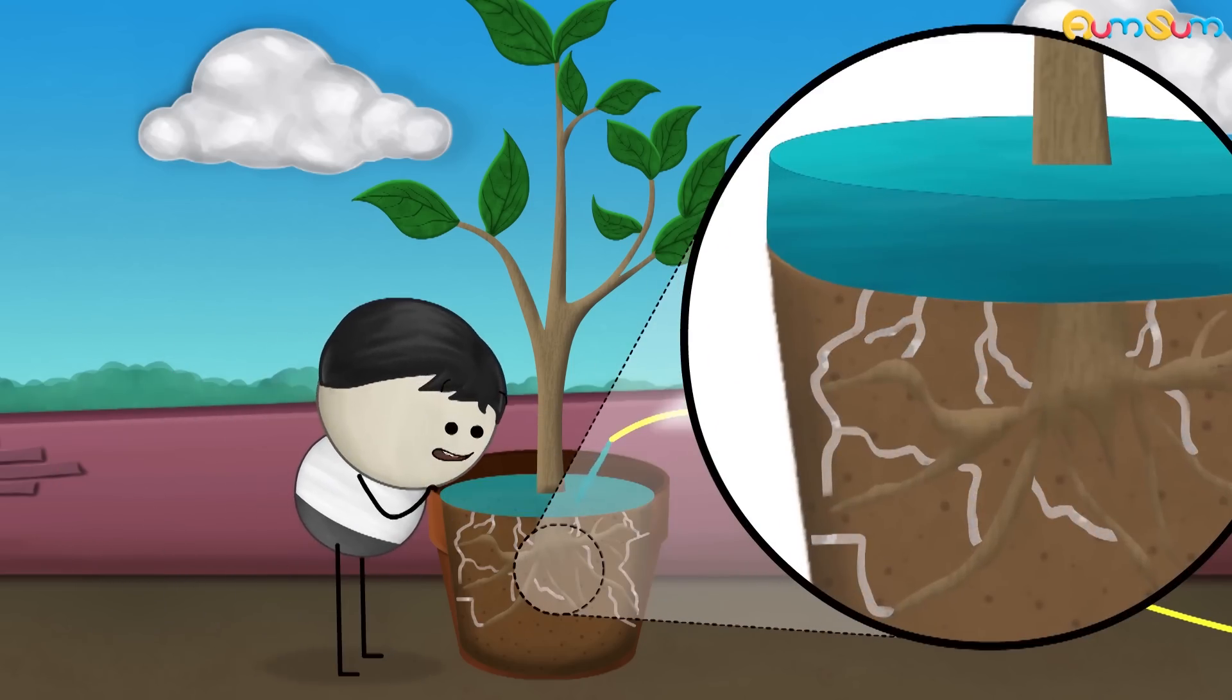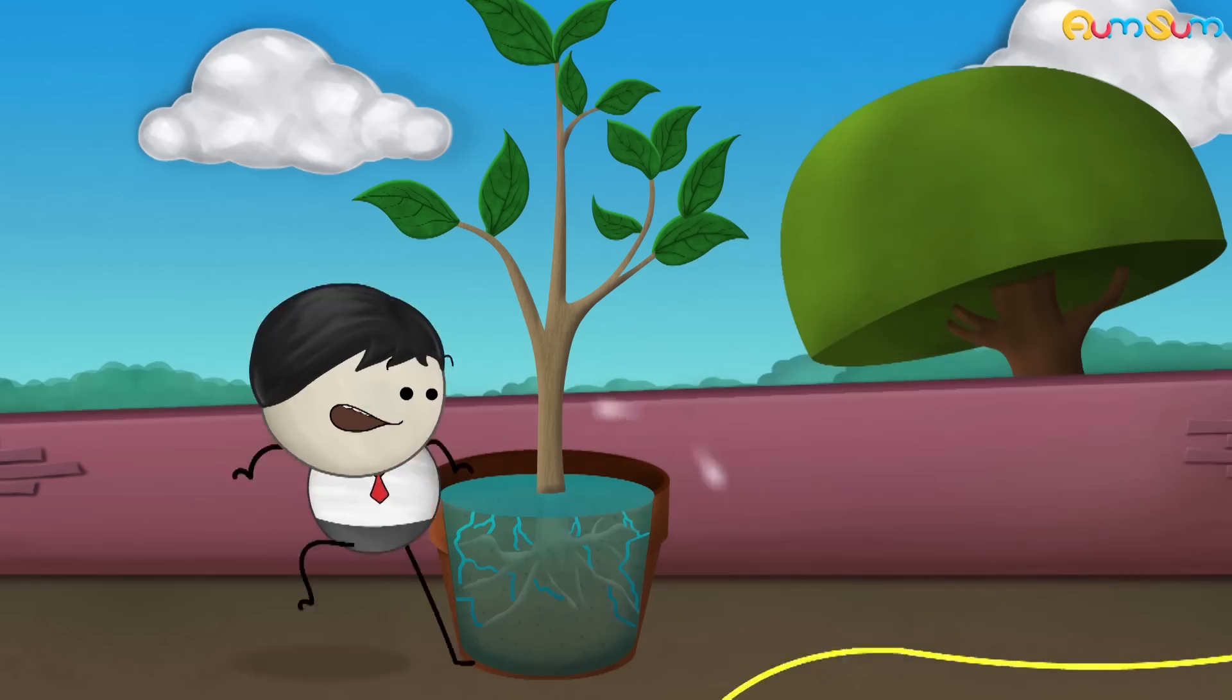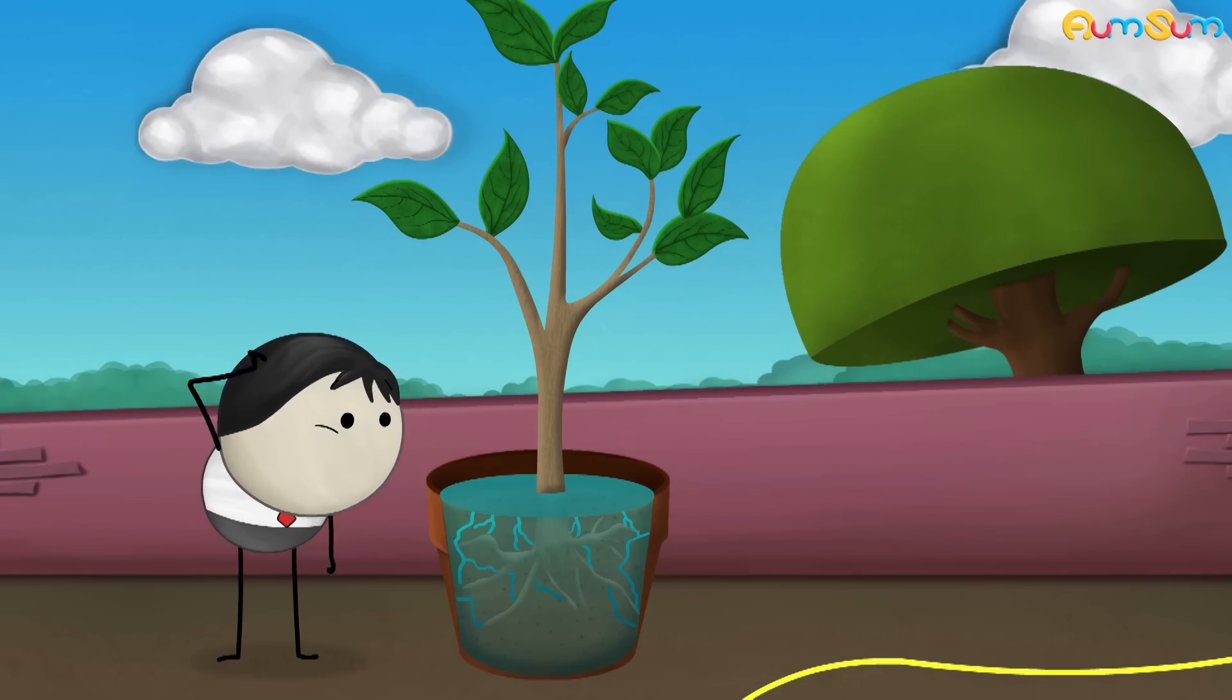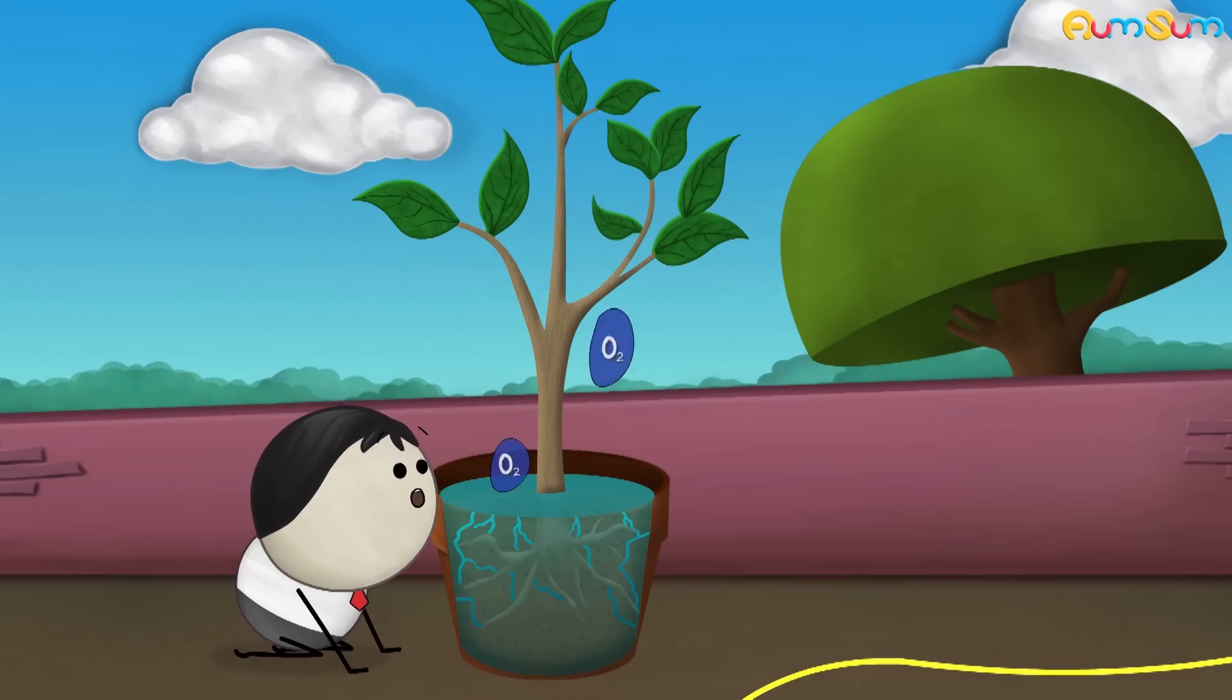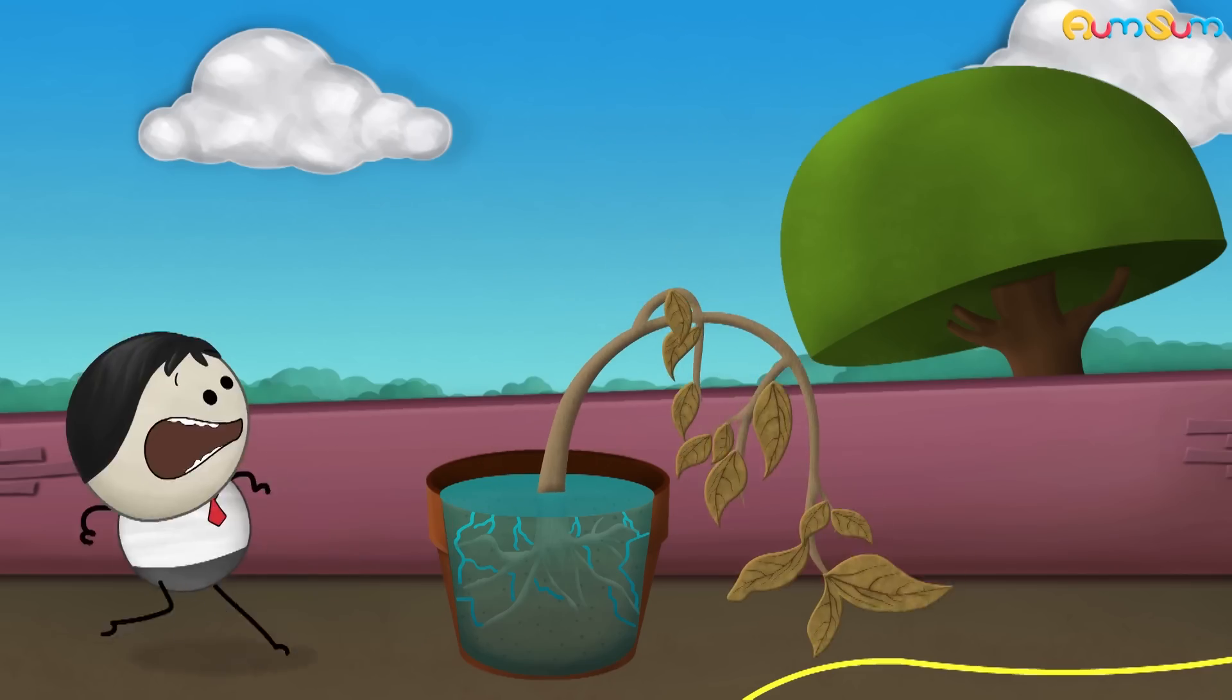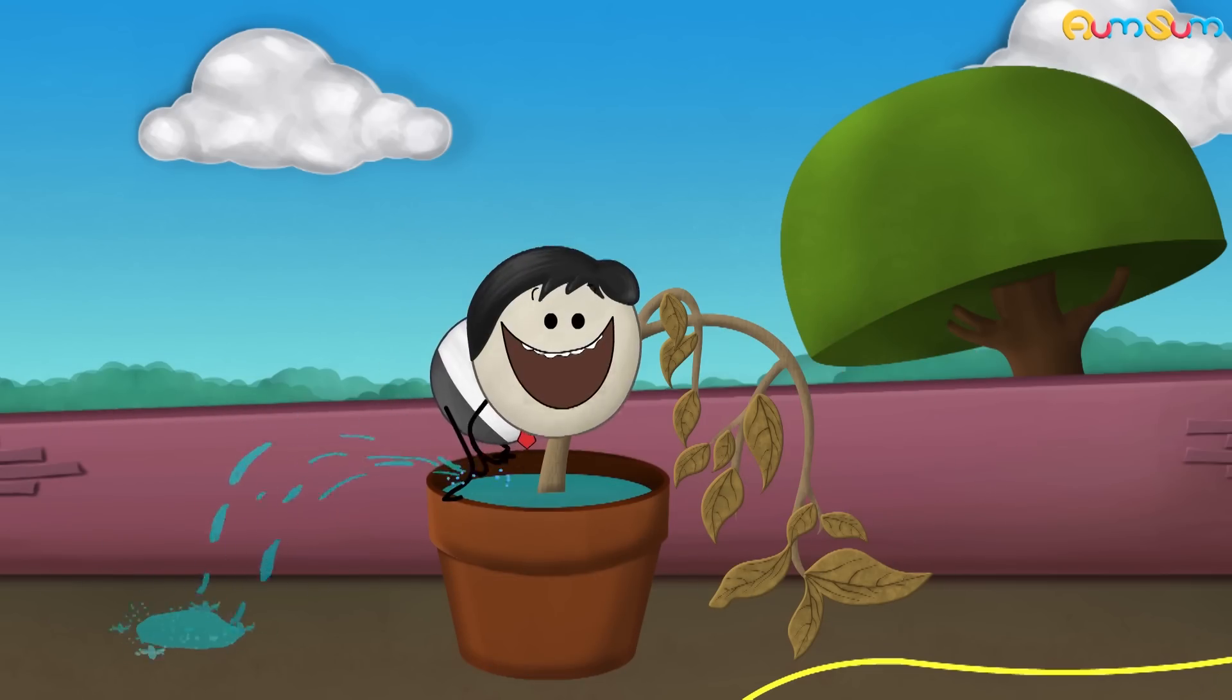When we overwater a potted plant, the air in the tiny spaces gets replaced by water. Yikes. So, do the roots know how to swim in water? Please listen. As air gets replaced by water, the roots do not get sufficient oxygen to breathe and they begin to rot. This may adversely affect the growth of the plant. Thus, we should always try to supply adequate water to the potted plants and not overwater them.